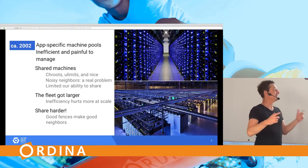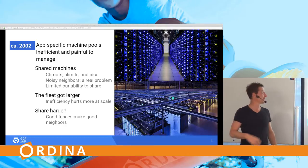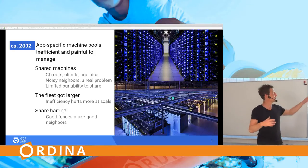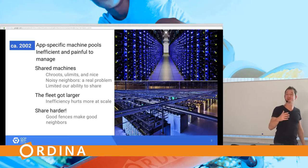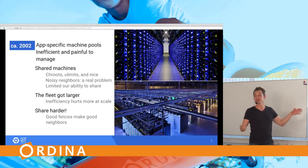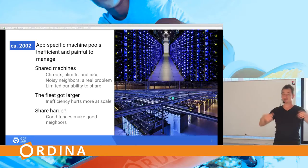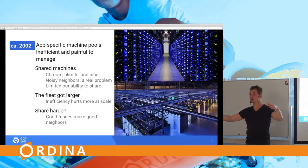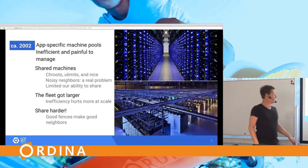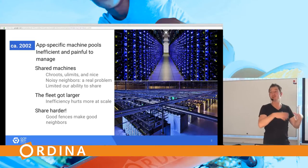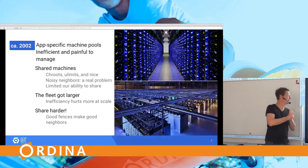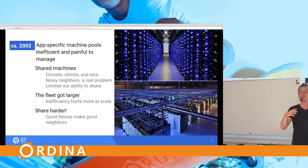A bit of history about how it went at Google. In 2002 Google was four years old, still in their infancy, and they had application-specific machine pools - a bunch of machines doing search, another bunch doing other things. This was inefficient because not every machine exploited all its resources all the time.